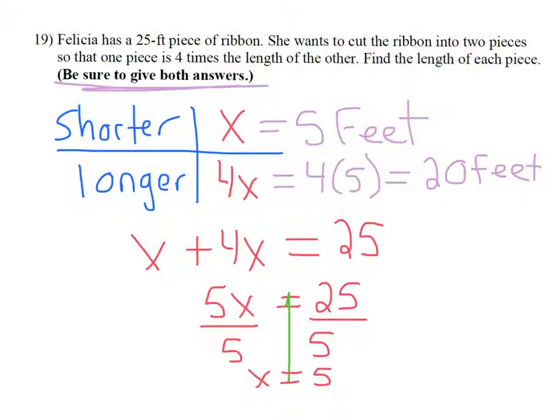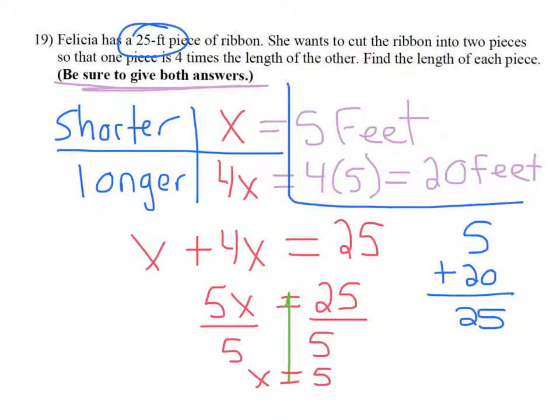A quick way to check this is add your two pieces. 5 plus 20 is 25, which matches what the original length of the ribbon was. So the answer to this equation is that the shorter piece is 5 feet and the longer piece is 20 feet.